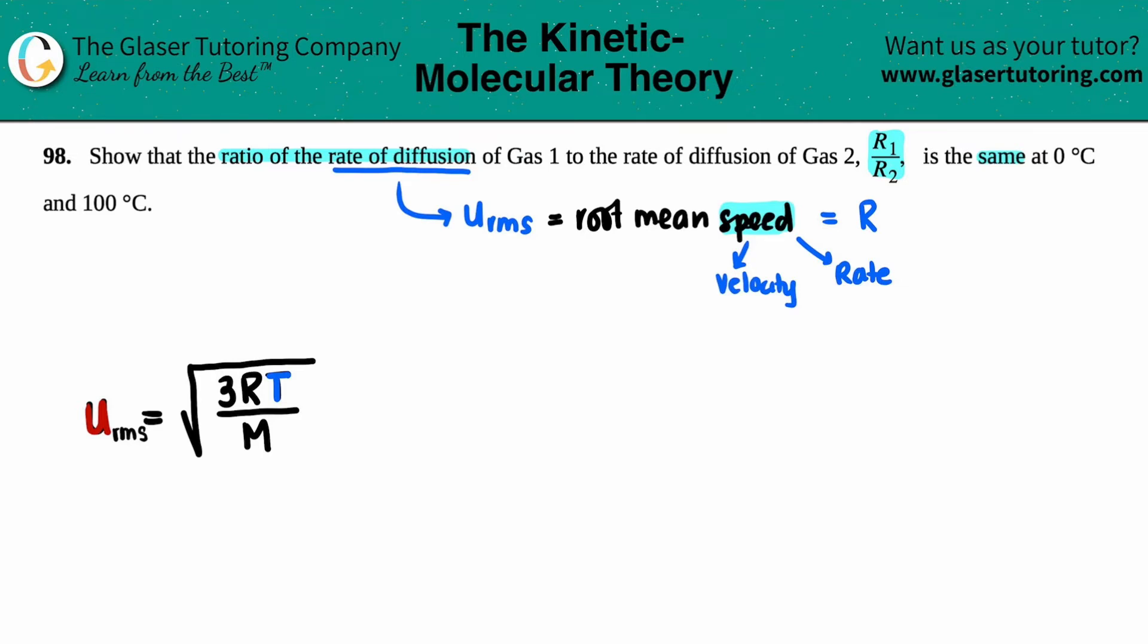So let's just pick some things out. Now, since we said that this root mean square, the root mean speed is the same thing as the rate, we could just take this out and just say this is acting as the rate, R. So now we got rid of the U and we have an R value here.